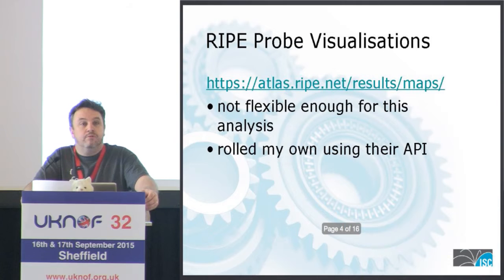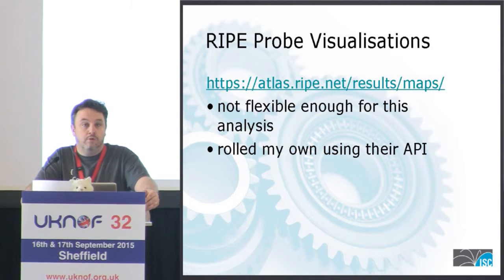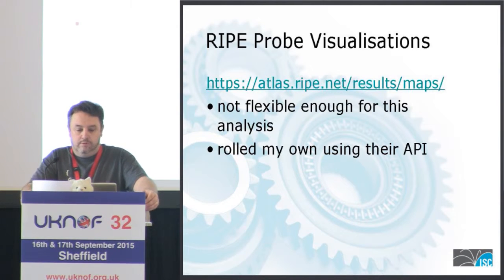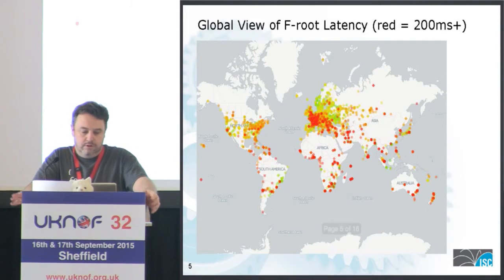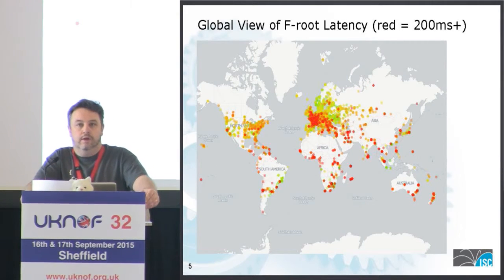RIPE already have some visualizations on their website that show this information, but it wasn't quite flexible enough. I wanted to be able to look at historic data more readily, even potentially real-time data. They've got quite a nice JSON-based API, so I rolled my own system using OpenStreetMap backing images and a whole load of Ajax, jQuery, and JavaScript. This is probably a couple of months old, but this is a typical view of what the latency looked like hitting F-root. We do have about 55 instances all around the world, quite a few in Europe.